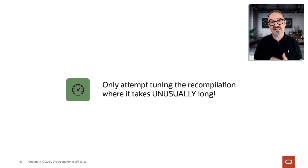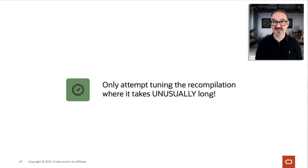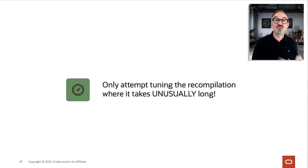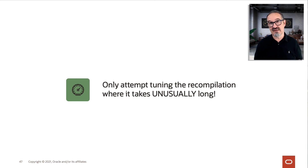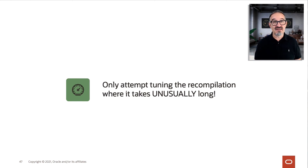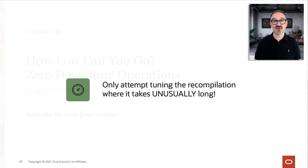Only attempt tuning the recompilation when you really have a ton of invalid objects. It doesn't make much sense for a standard set. Especially when you have a lot of invalid user objects in your user schemas, then it may make sense. When recompilation takes unusually long — let's say your upgrade takes 30 minutes and the recompilation takes 45 minutes — then look into it. Otherwise, don't.